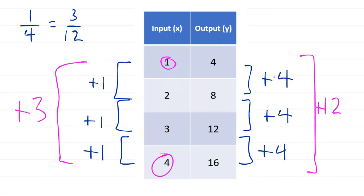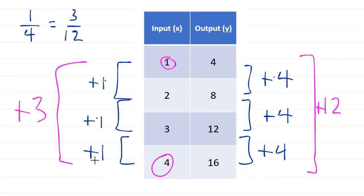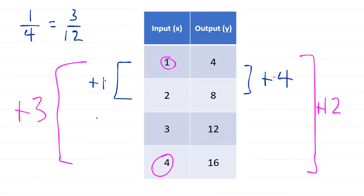I just want you to be comfortable with the idea that every corresponding change in the input should give us the same corresponding change in the output. On homework assignments and tests, it's not always going to be the exact same change in x giving you the exact same change in y. They might only give you certain points, and you need to recognize that the rate is still proportional and therefore linear.